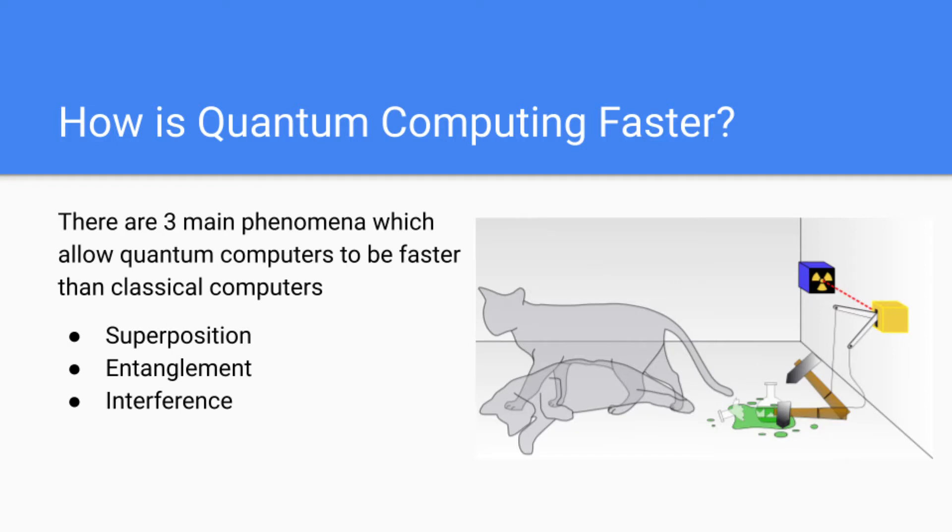So what exactly makes quantum computing faster? We already talked a little bit about superposition with qubits, but there are also two other quantum mechanical phenomena that allow quantum computers to be faster than classical computers. And these are entanglement and interference. We'll have separate lectures covering each of them. But just know for right now that it's basically these three phenomena that help quantum computers be faster than classical computers.